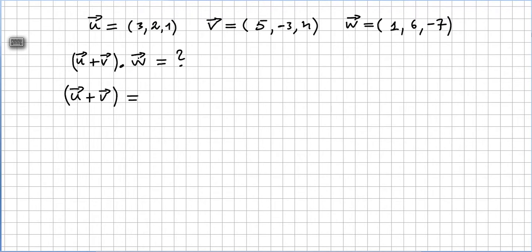u plus v is only a matter of adding components, so u plus v will be 3 plus 5, 2 minus 3, 1 plus 4. That is (8, -1, 5).